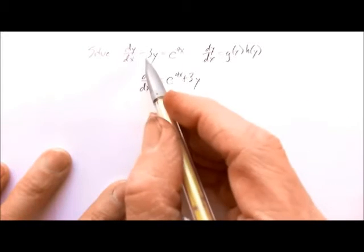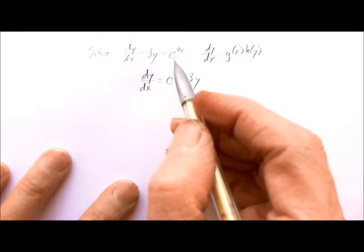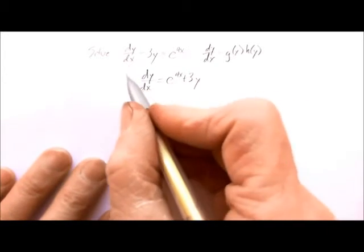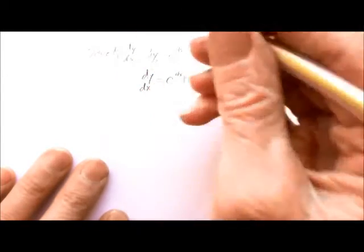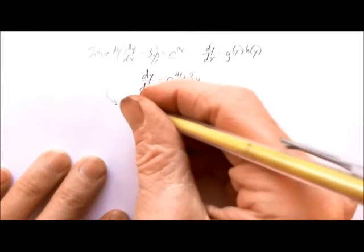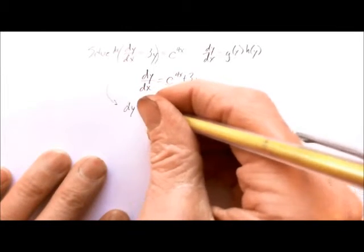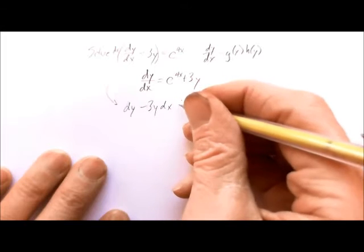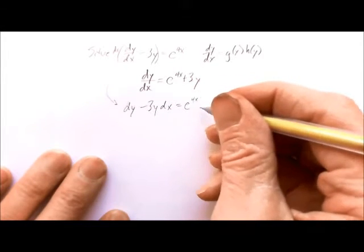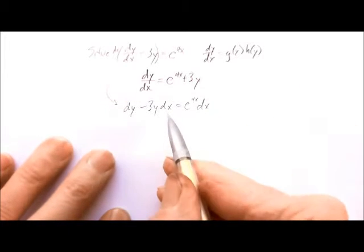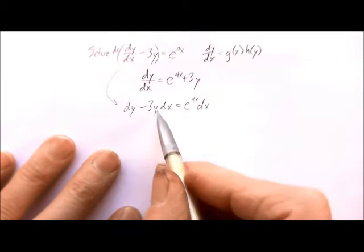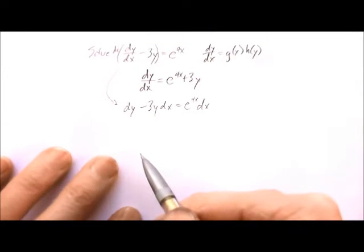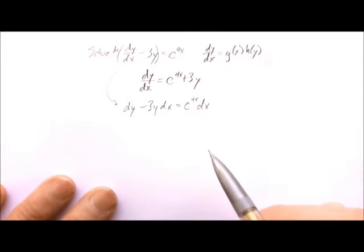Some of you might think we could multiply by dx on both sides, but remember you have to multiply the entire side by dx. What you'd end up with is dy minus 3y dx equals e^(4x) dx. You can try moving terms around, but the algebra just won't work out. So instead we need to use the method of an integrating factor.